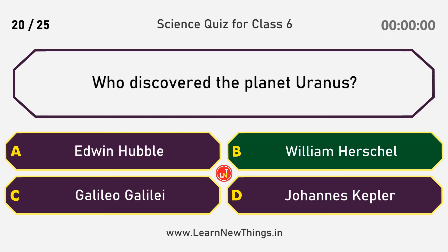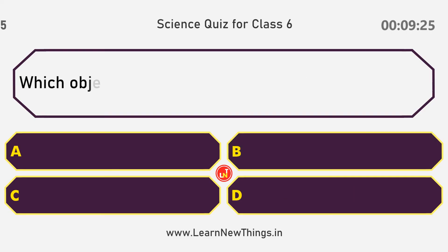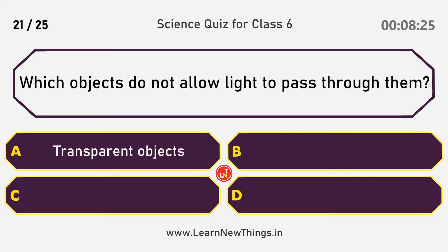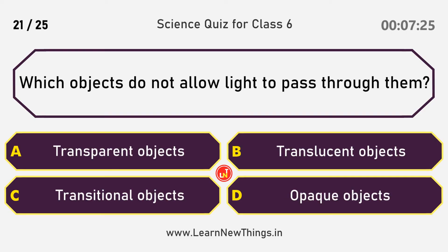William Herschel discovered the planet Uranus. Which objects do not allow light to pass through them? Answer: Opaque objects.